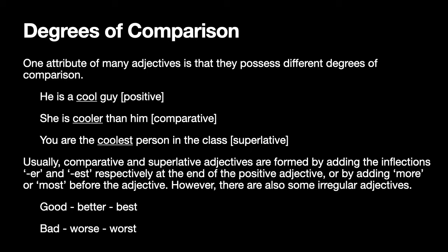One important characteristic feature of adjectives is that they possess different degrees of comparison. Most adjectives can be used in different degrees of comparison. What are the three degrees? The positive degree, the comparative degree, and the superlative degree. The positive degree is just used to make a basic statement about something — it is the basic form of the adjective.